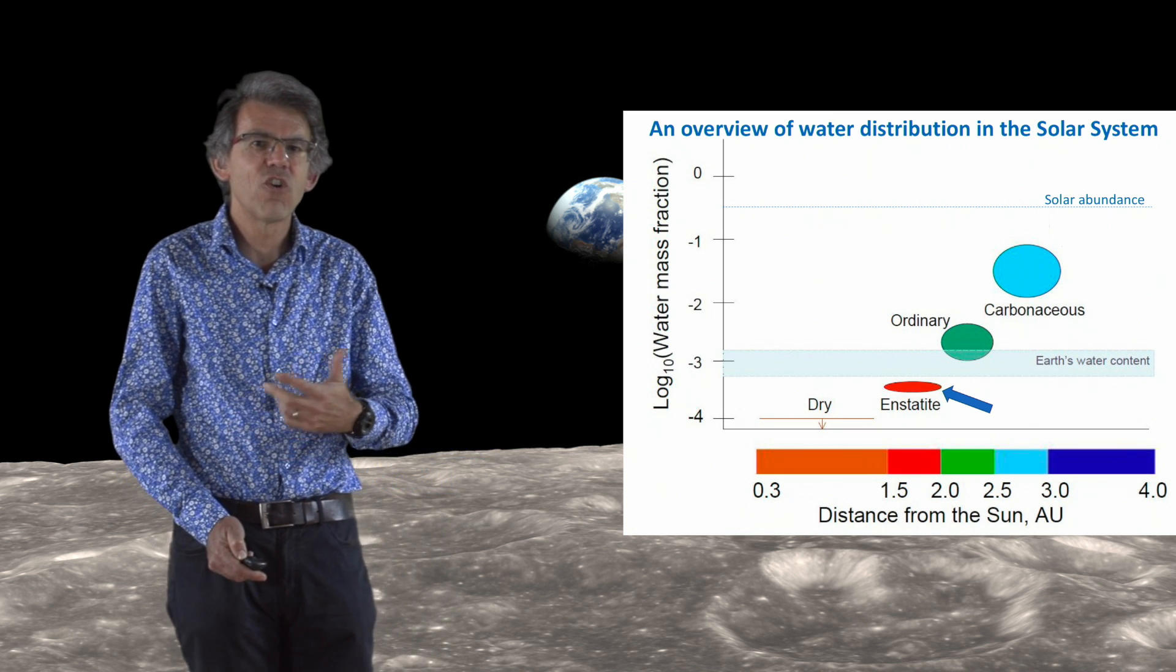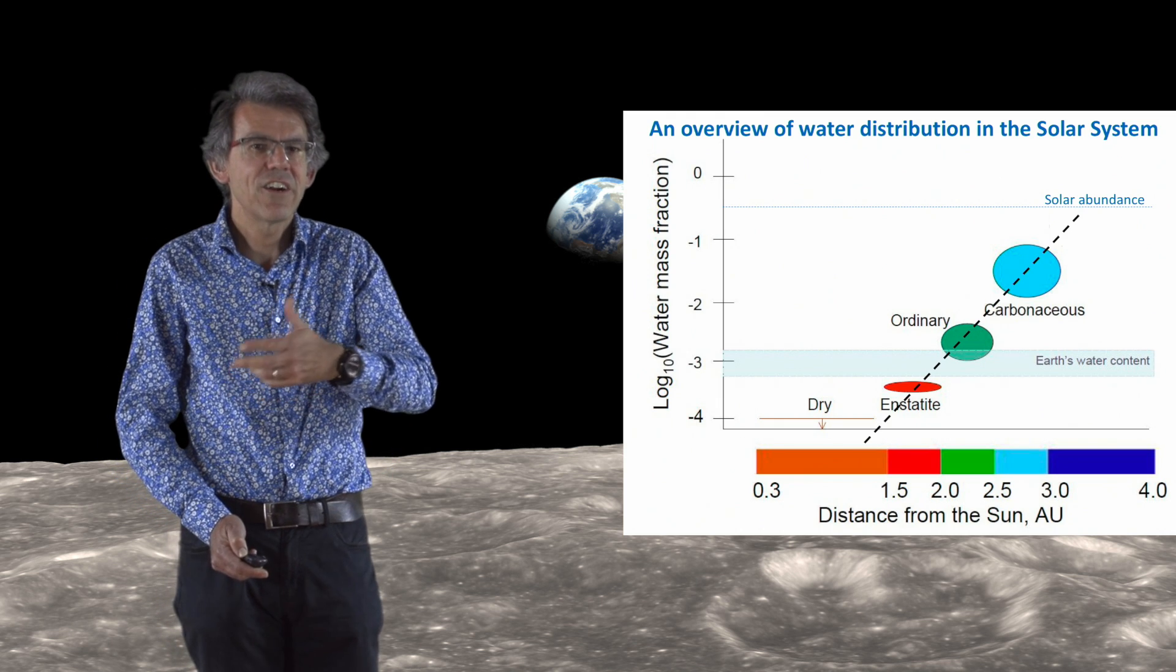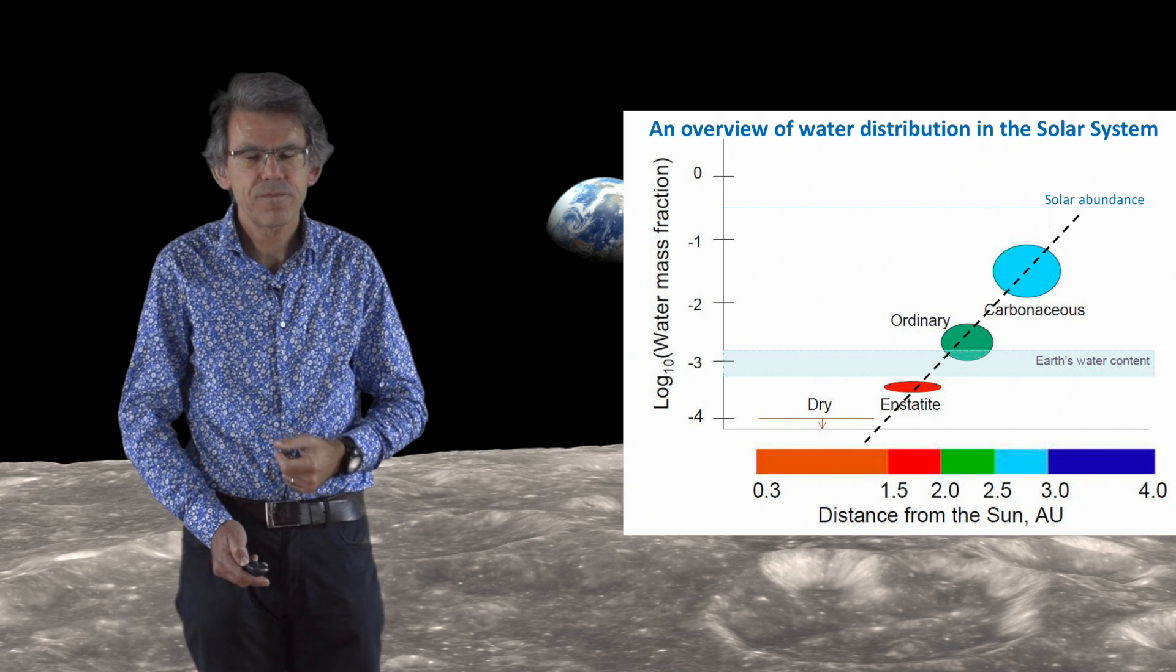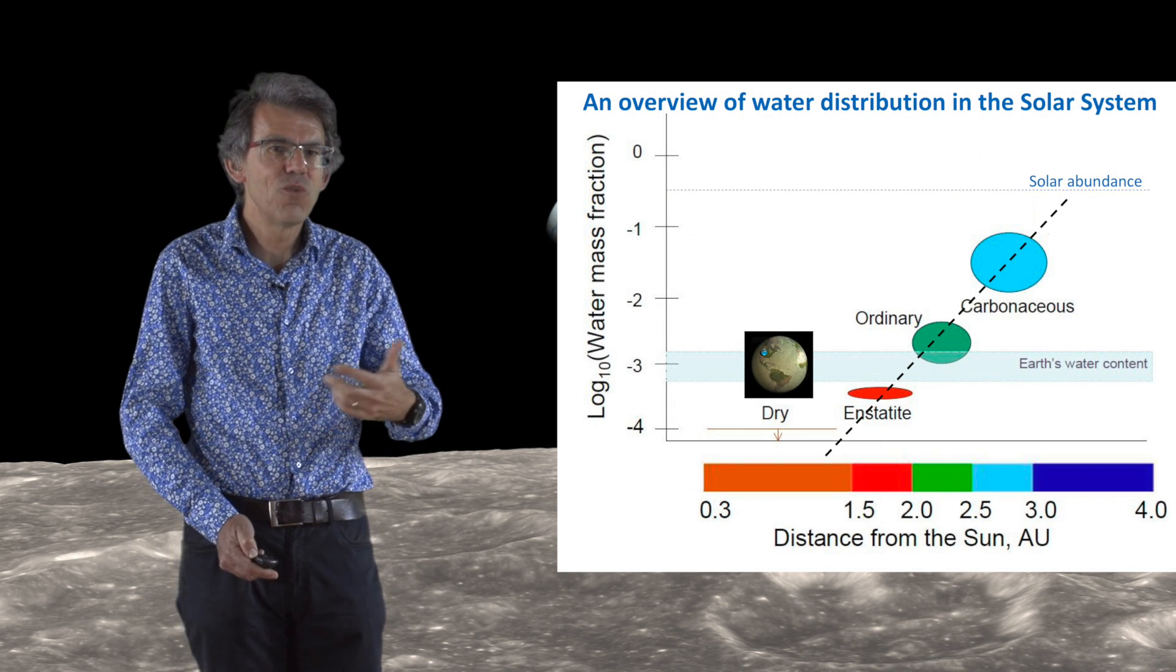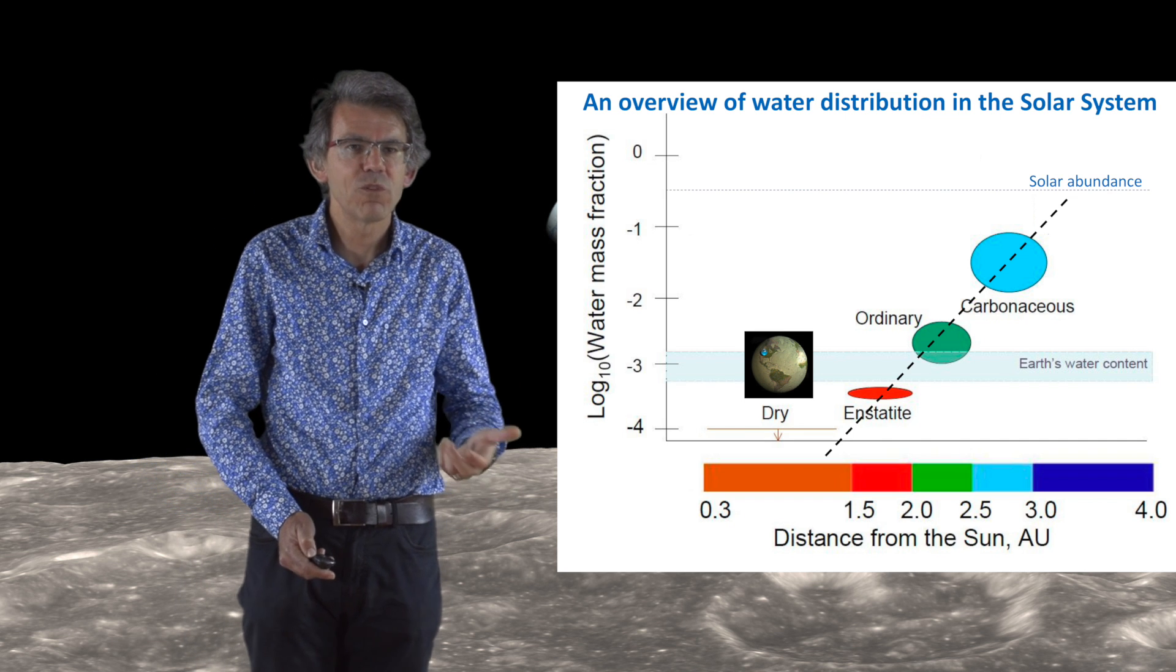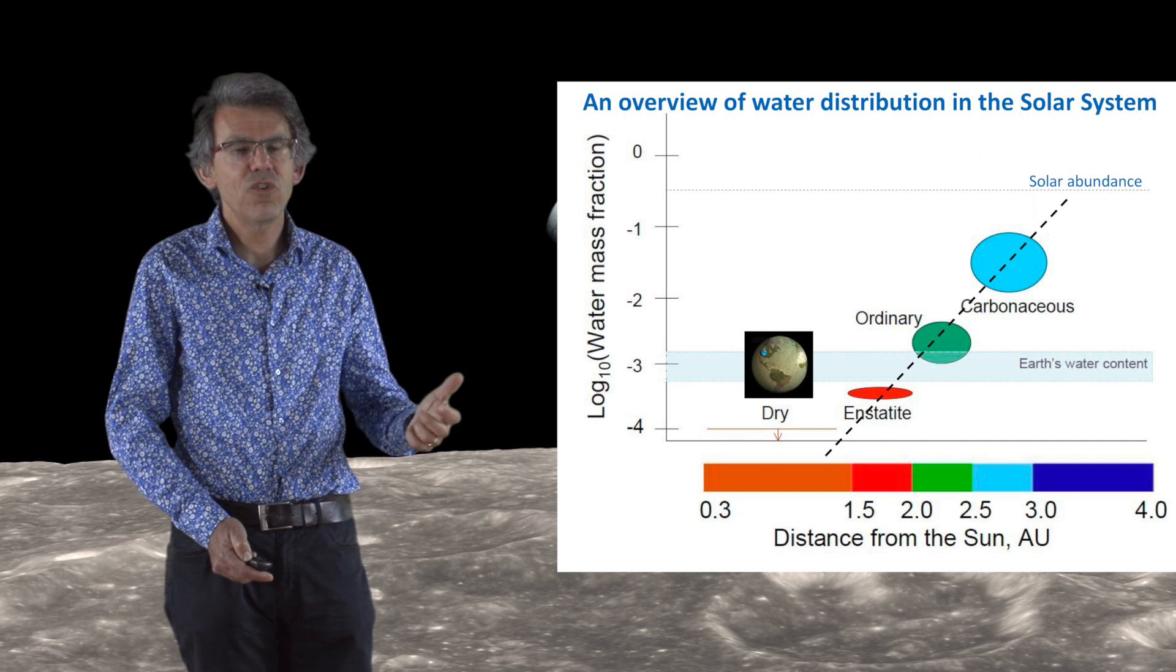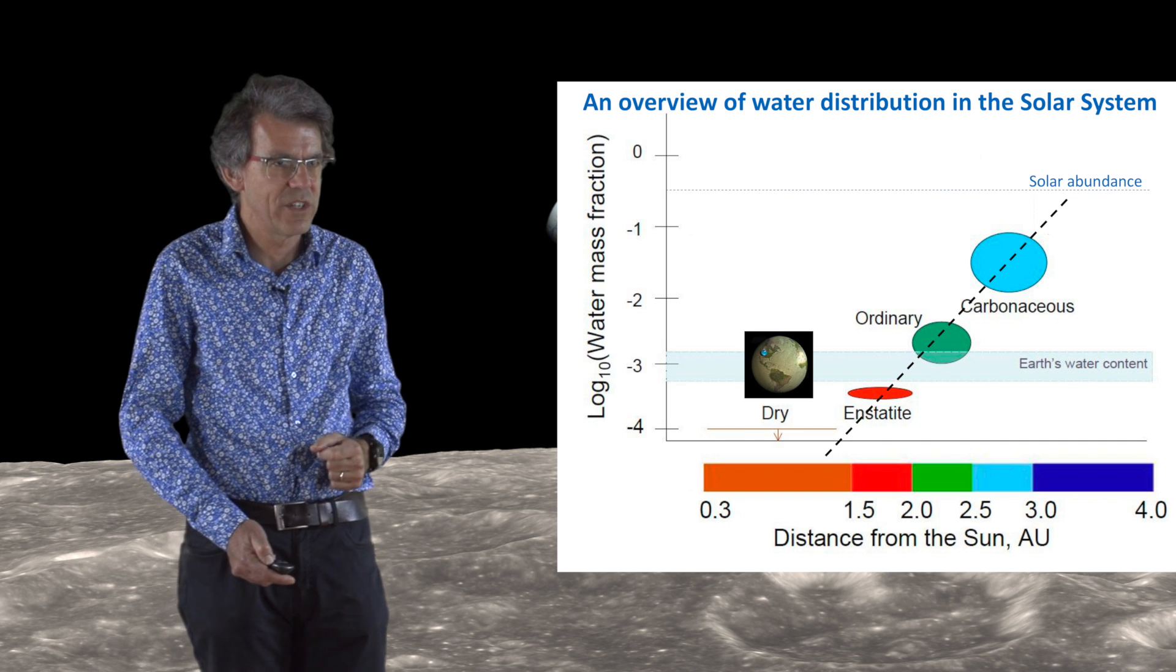So all this data suggests that there is a correlation between the water content of planetesimals and their distance with respect to the Sun. We've seen in part 5 that the Earth is quite dry, but compared to this correlation, the Earth is actually richer in water by one or two orders of magnitude compared to what we would expect. So this suggests that the Earth accreted its water from planetesimals that formed further out in the solar system.